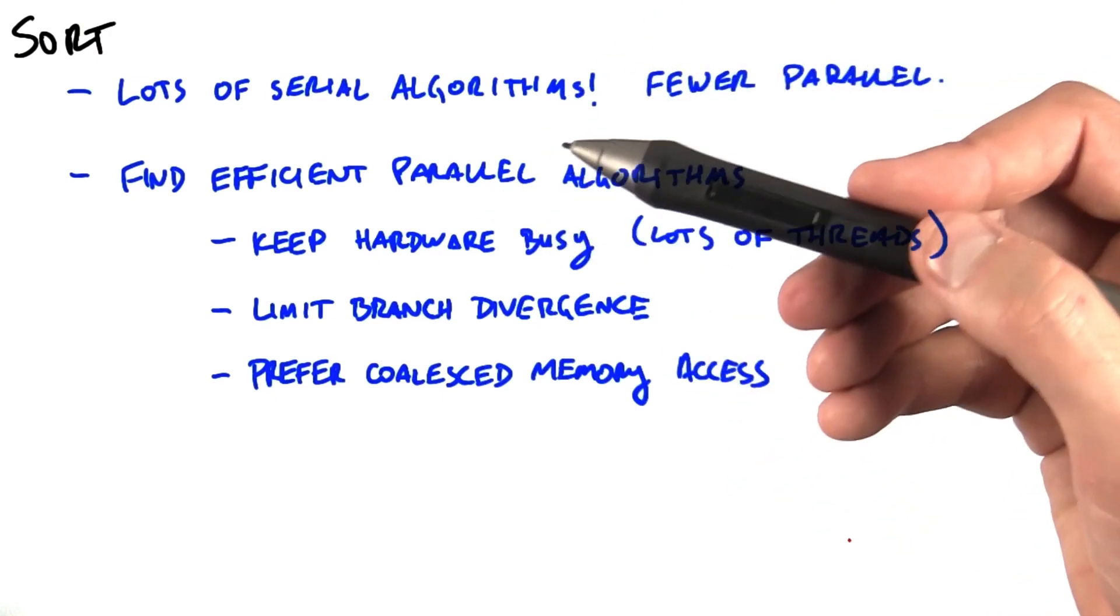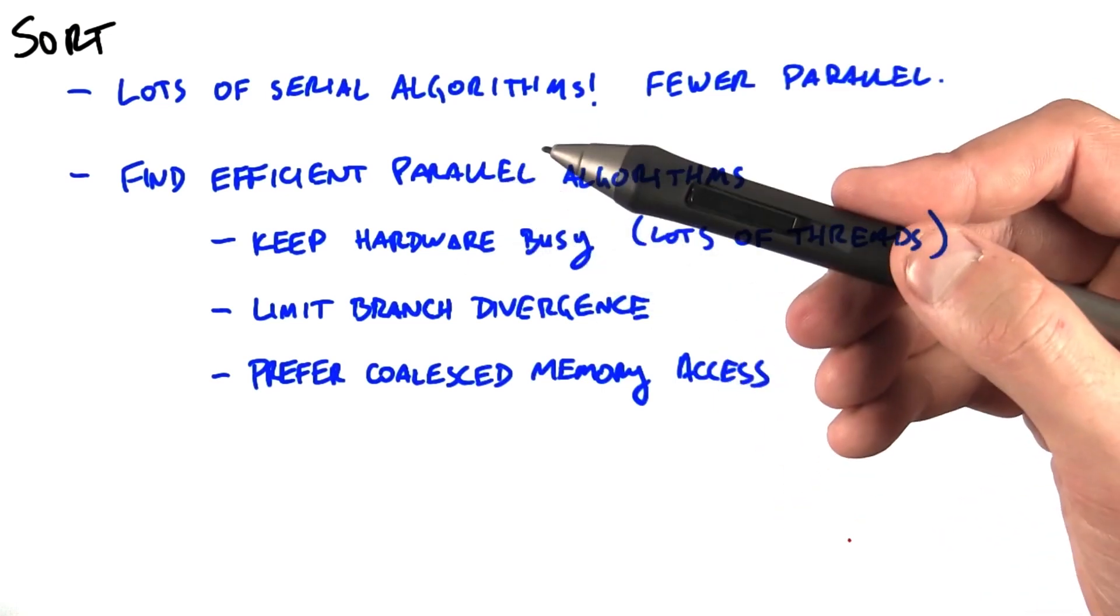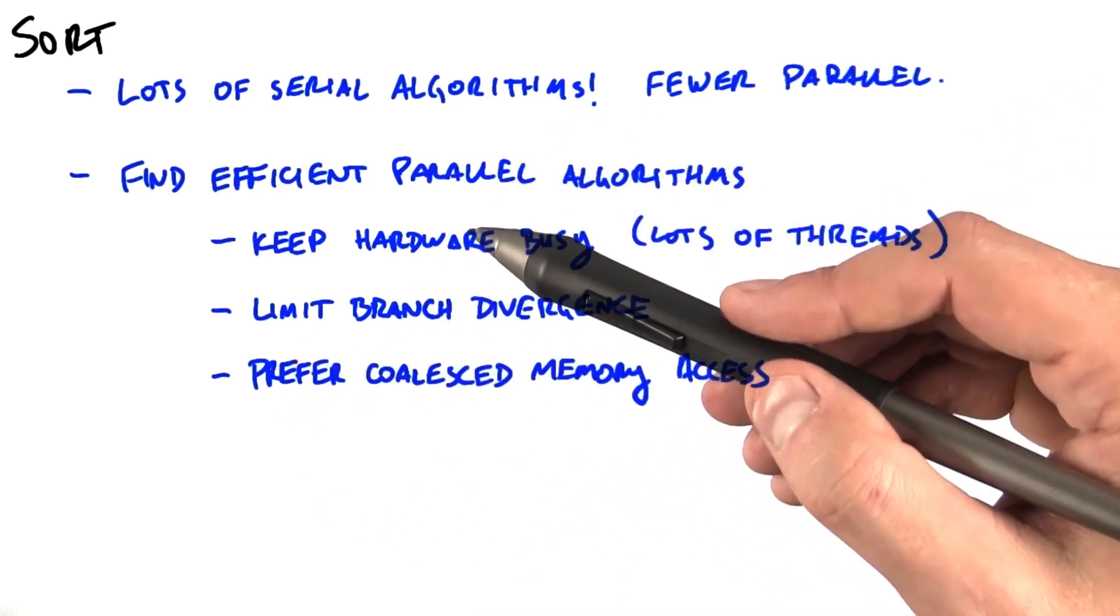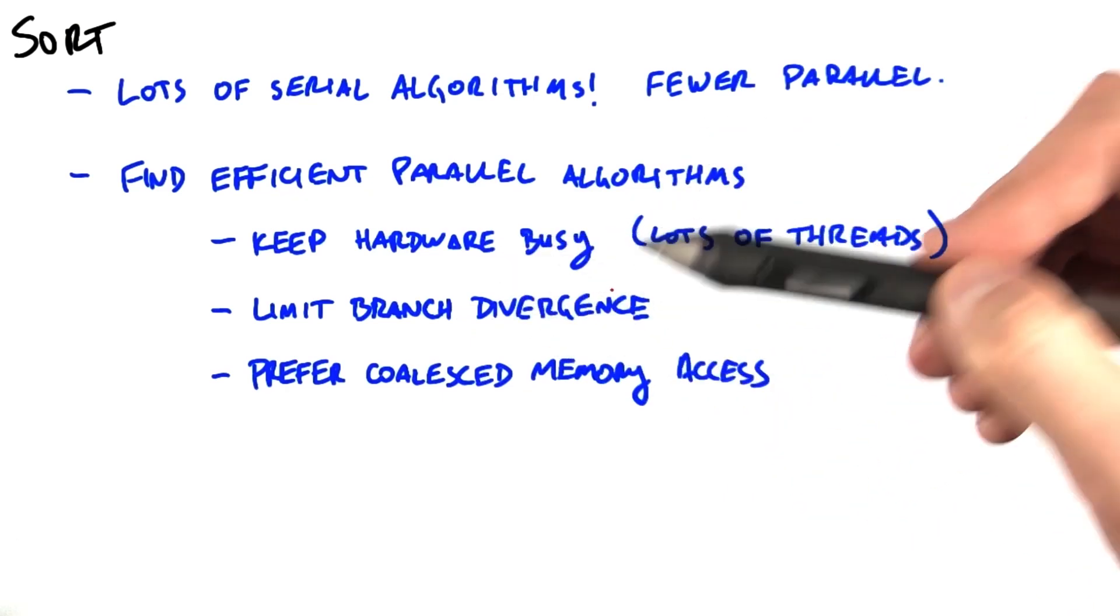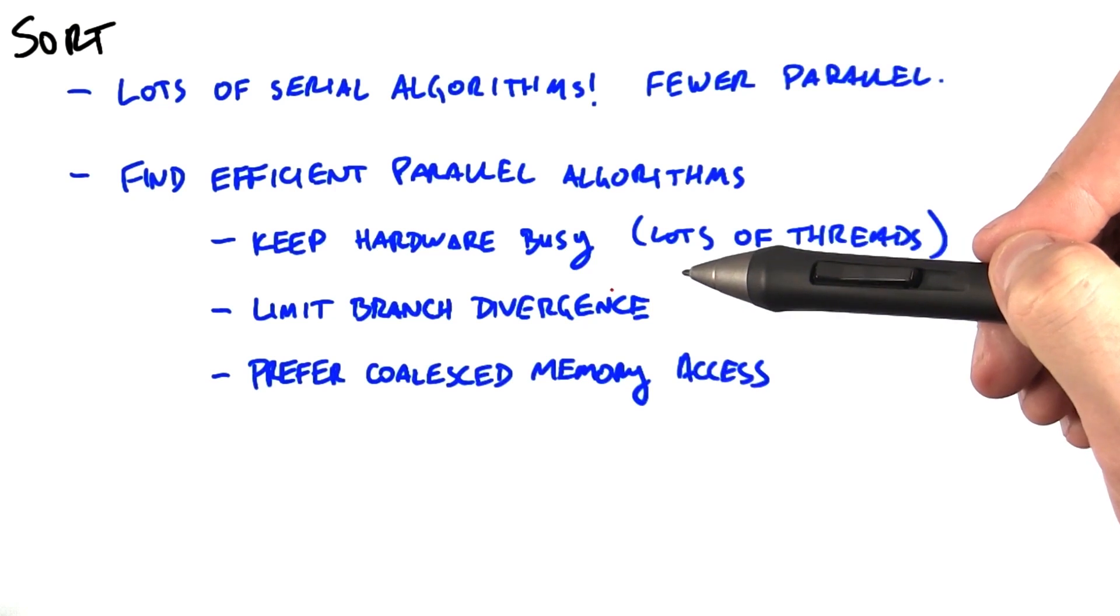The second is that for performance reasons, we prefer to look at parallel algorithms that coalesce memory accesses, that have little branch divergence among threads, and particularly that are able to keep the hardware busy by keeping lots of threads busy at the same time.